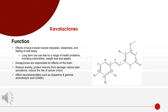Kava lactones are currently under research for potential psychotropic effects. Effects of kava include muscle relaxation, sleepiness, and a feeling of well-being. However, long-term use of kava can lead to health problems including malnutrition, weight loss, and apathy. Kava pyrones are responsible for effects on the brain — they reduce anxiety, protect neurons from damage, reduce pain sensation, and reduce the risk of cancer, as determined from a study done in mice. Kava lactones have also been found to affect neurotransmitters such as dopamine and gamma-aminobutyric acid.